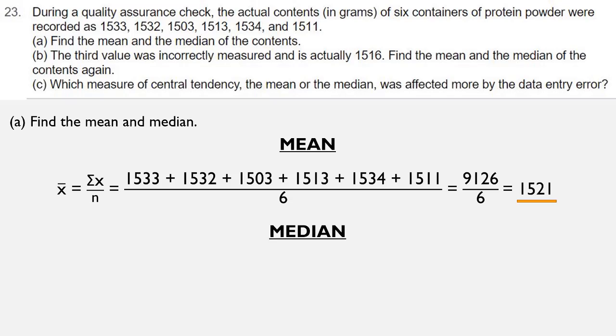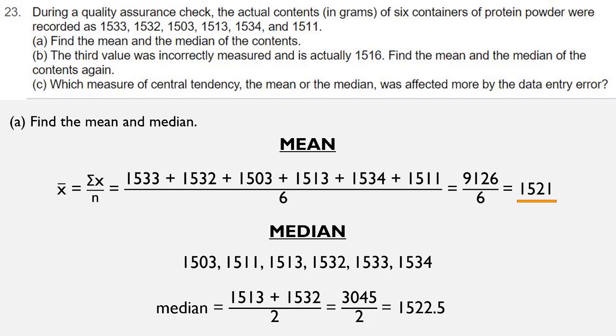For the median, I need to arrange my data set in order. So if I were to order the data set, it would be 1503, 1511, 1513, 1532, 1533, and 1534. We can see we have an even number of data entries. So to find the median, we have to take the average of the two central entries, which are 1513 and 1532. We add them together and divide by two and get 1522.5. So that's our median.